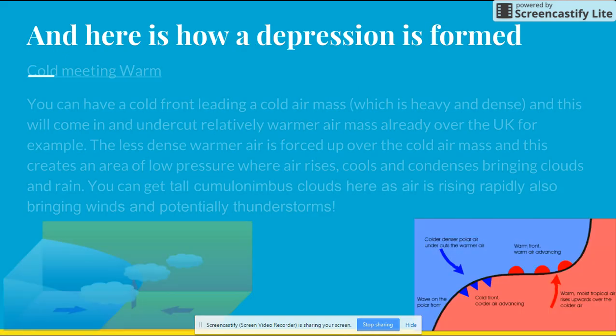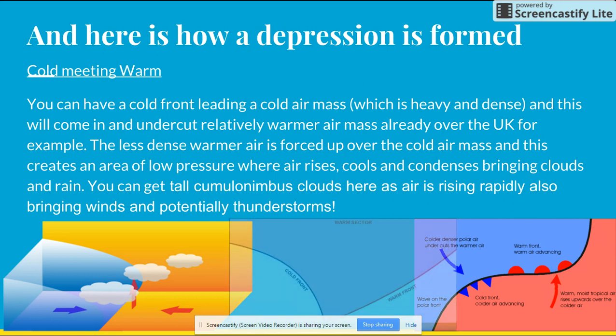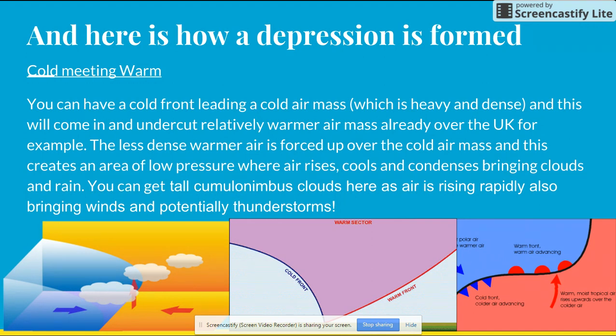This is how a depression is formed — there are two ways it can happen. First, cold meeting warm: a cold front leads a cold air mass, which is heavy and dense. This comes in and undercuts a relatively warm air mass already over the UK, for example. The less dense, warmer air is forced up over the cold air mass, creating an area of low pressure where it rises, cools and condenses, bringing clouds and rain. You can get tall cumulonimbus clouds where air is rising rapidly, also bringing winds and potentially thunderstorms.